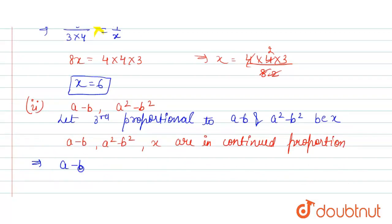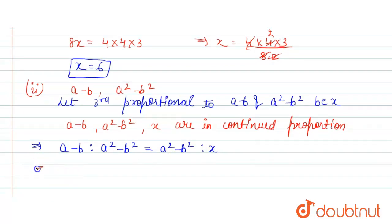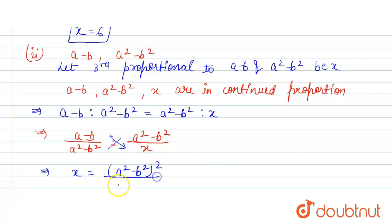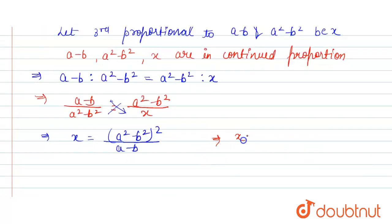So a minus b ratio a squared minus b squared is equal to a squared minus b squared ratio x. That implies a minus b divided by a squared minus b squared is equal to a squared minus b squared divided by x. From here we can find the value of x, that is a squared minus b squared whole square divided by a minus b, after cross multiplying.